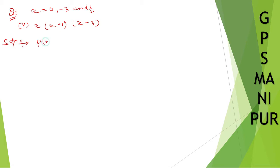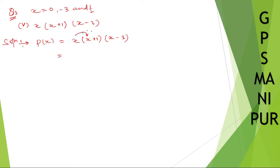P of x is equal to x into x plus 1, into x minus 3. Now, x into x plus 1 — if you multiply x to both numbers: x into x will become x square, plus x into 1 will become x.